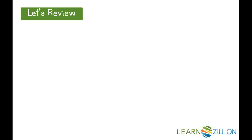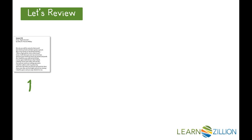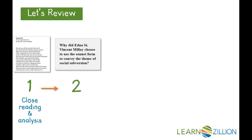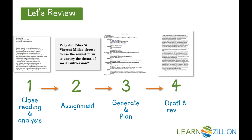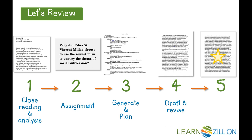The process of creating a high-quality argumentative essay has five steps. The first step is close reading and analysis. The second step is the assignment stage. The third step is generate and plan. The fourth step is draft and revise. And our fifth and final step is edit and publish.